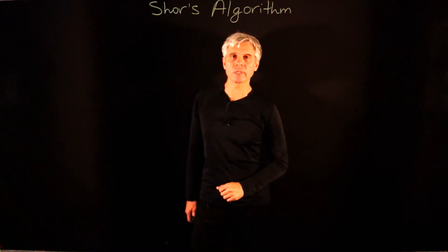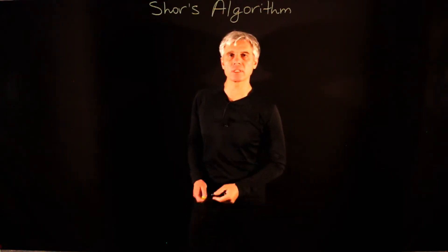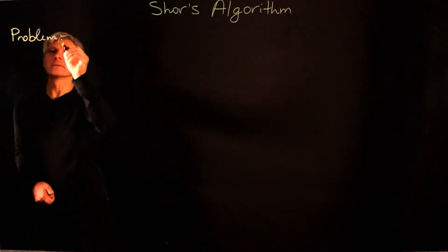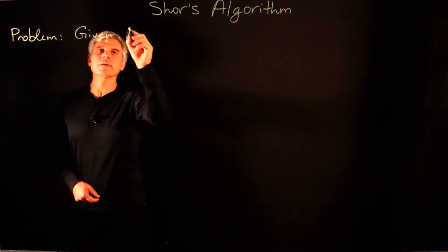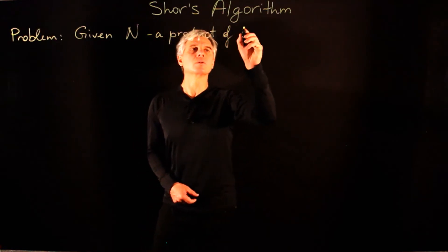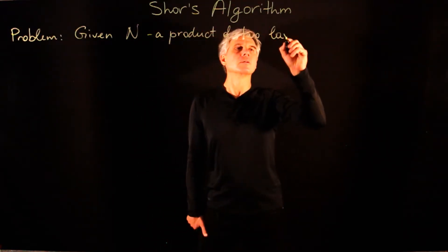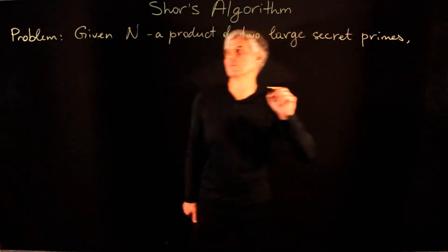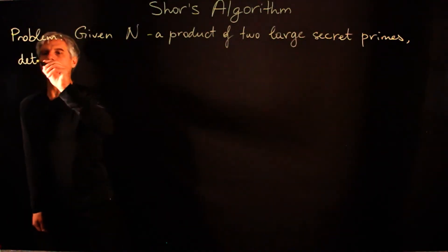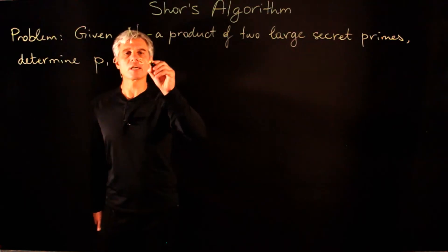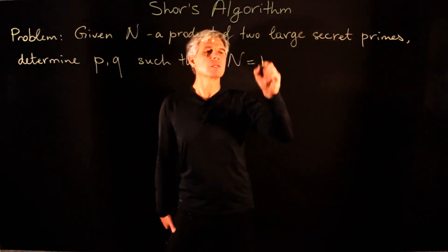We have come to the high point of this course: the discussion of Shor's algorithm. Shor's algorithm is the quantum algorithm for integer factorization, and it solves the following problem. Given n, a product of two large secret primes, determine p and q such that n is equal to p times q.